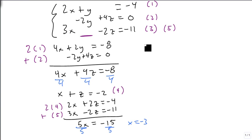This means that 2 times minus 3 plus y equals minus 4. So minus 6 plus y equals minus 4. So y is 2.